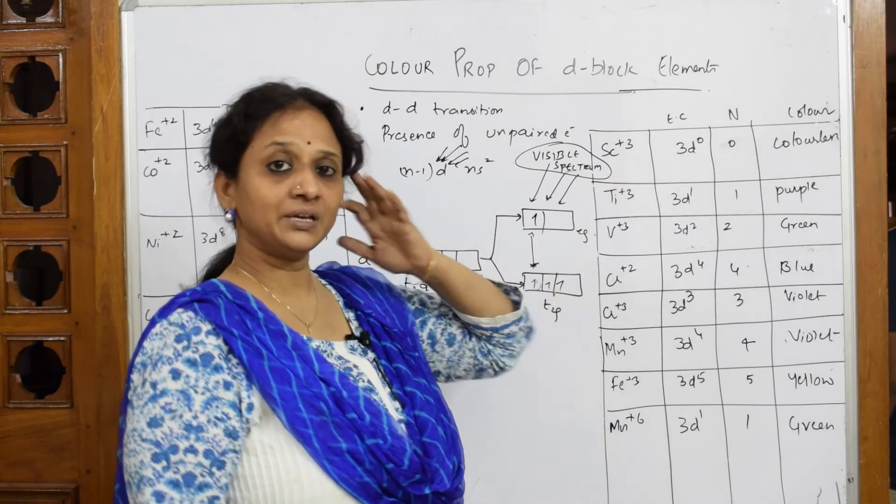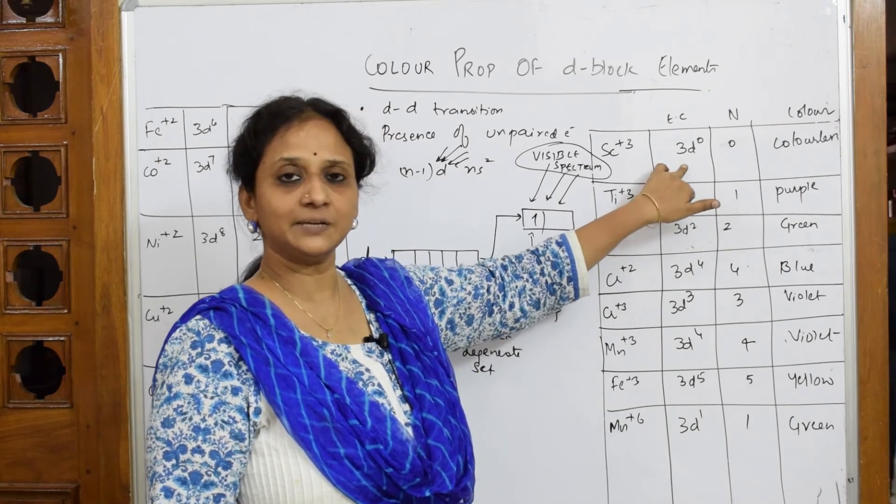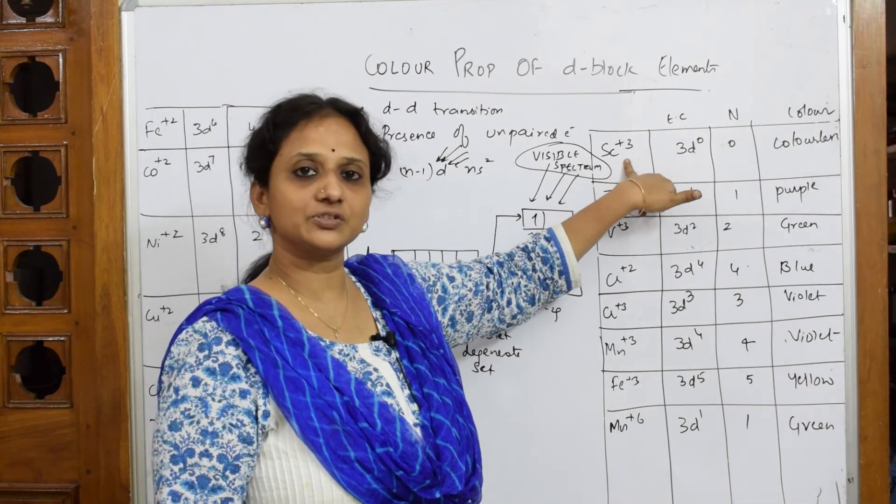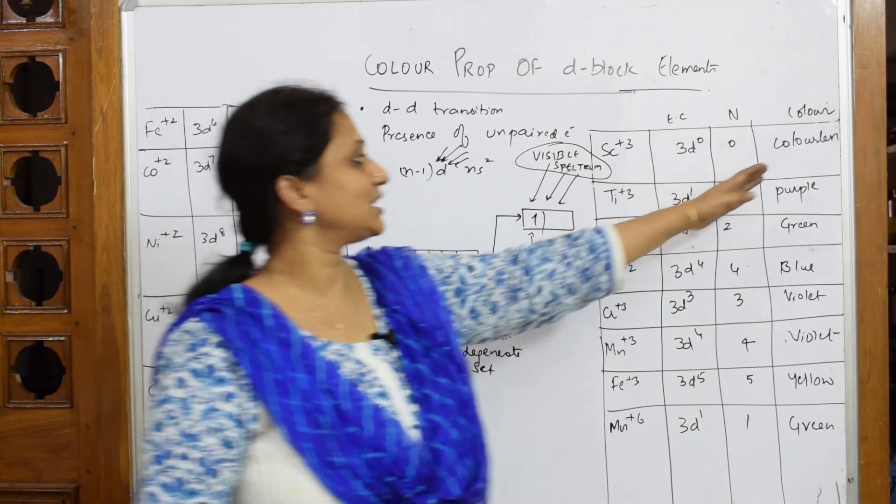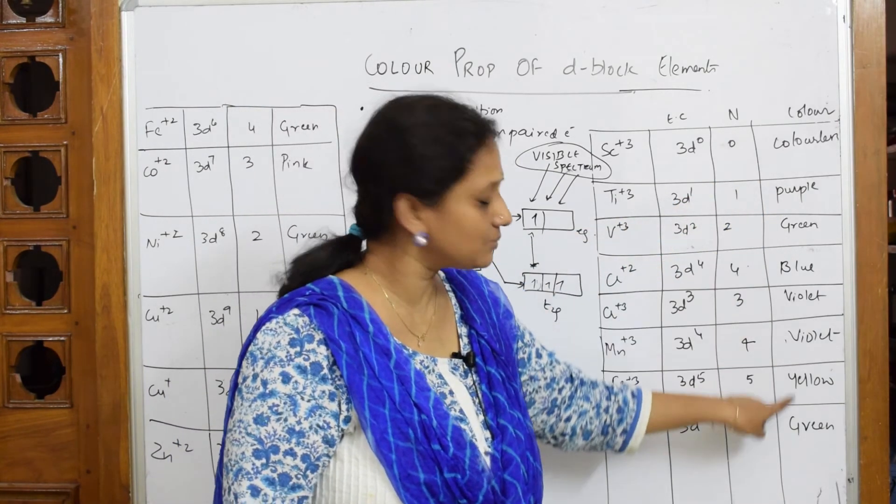Let us see: in scandium it doesn't have any 3d electron because it has already lost all electrons. Configuration is 3d¹ 4s² - it has already lost all the electrons. No electron can excite, so it is colorless.